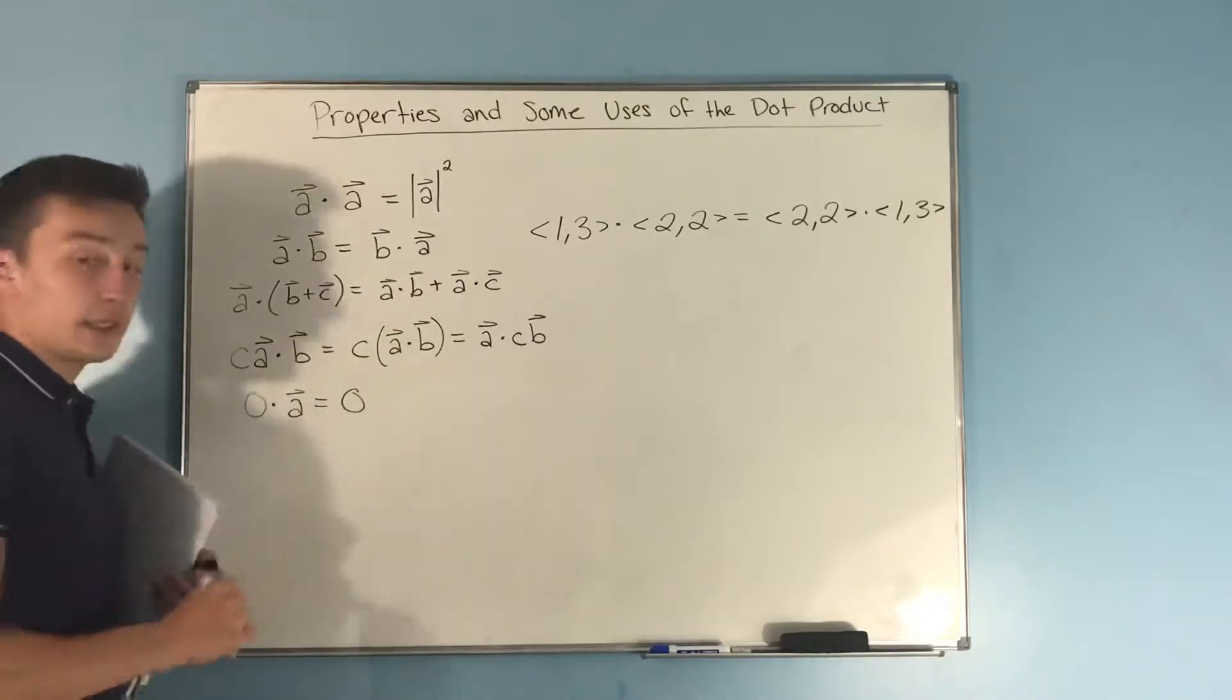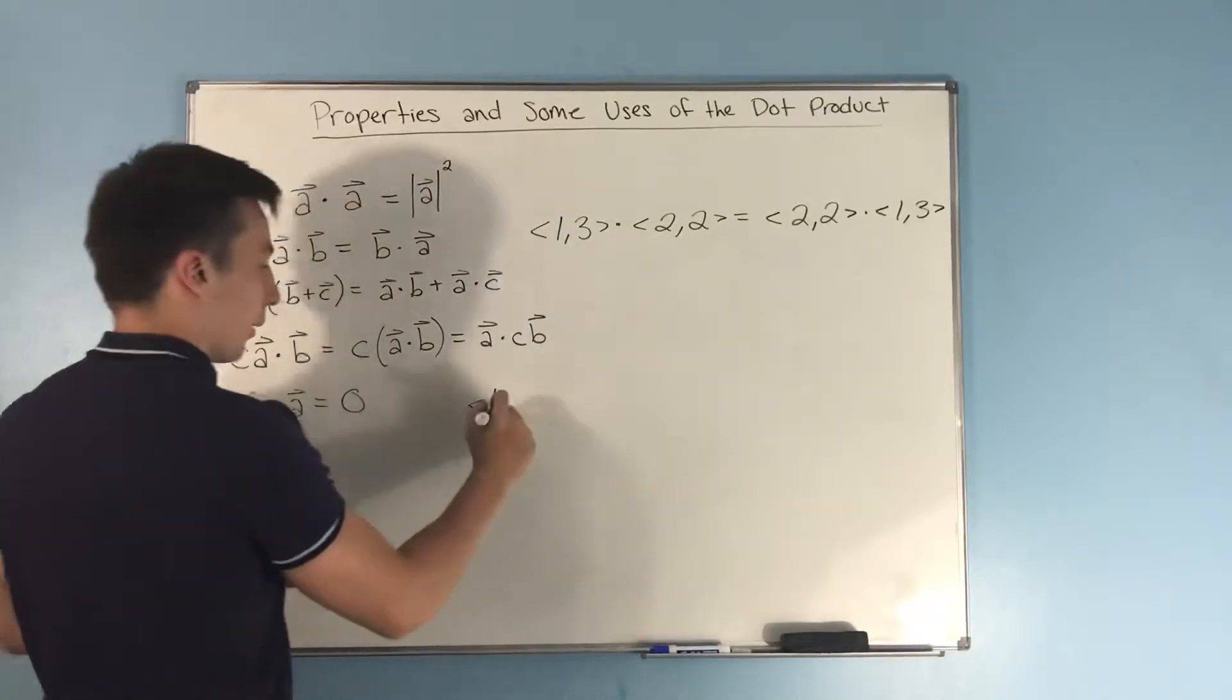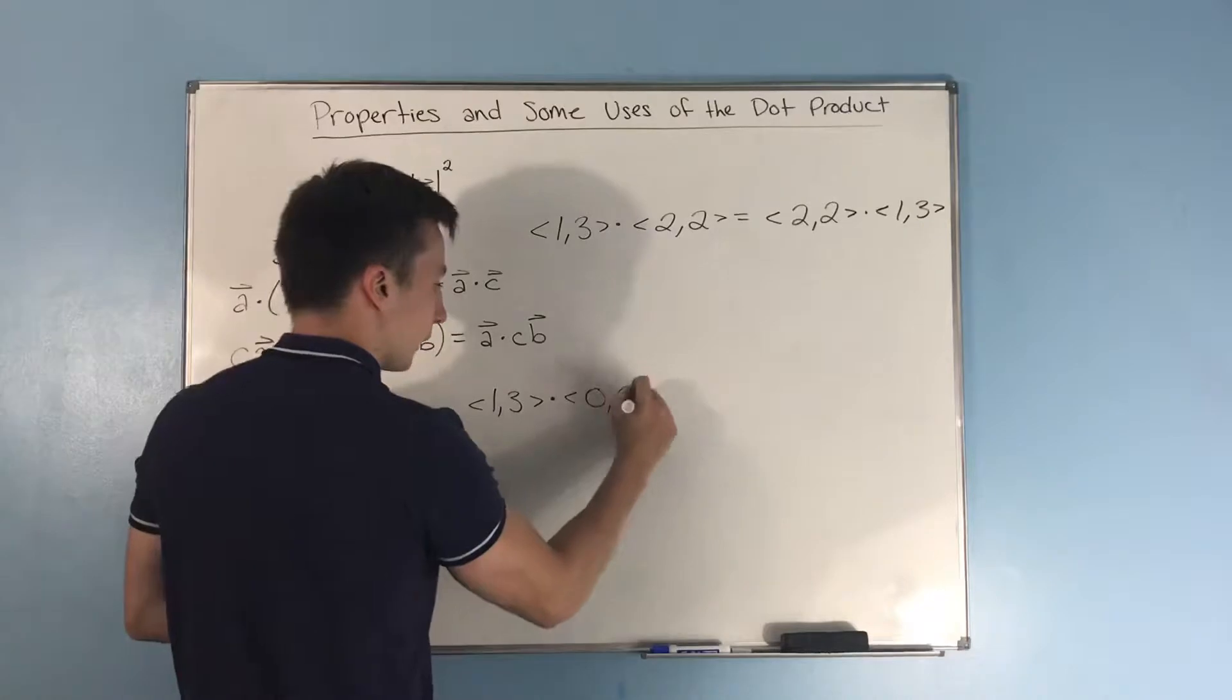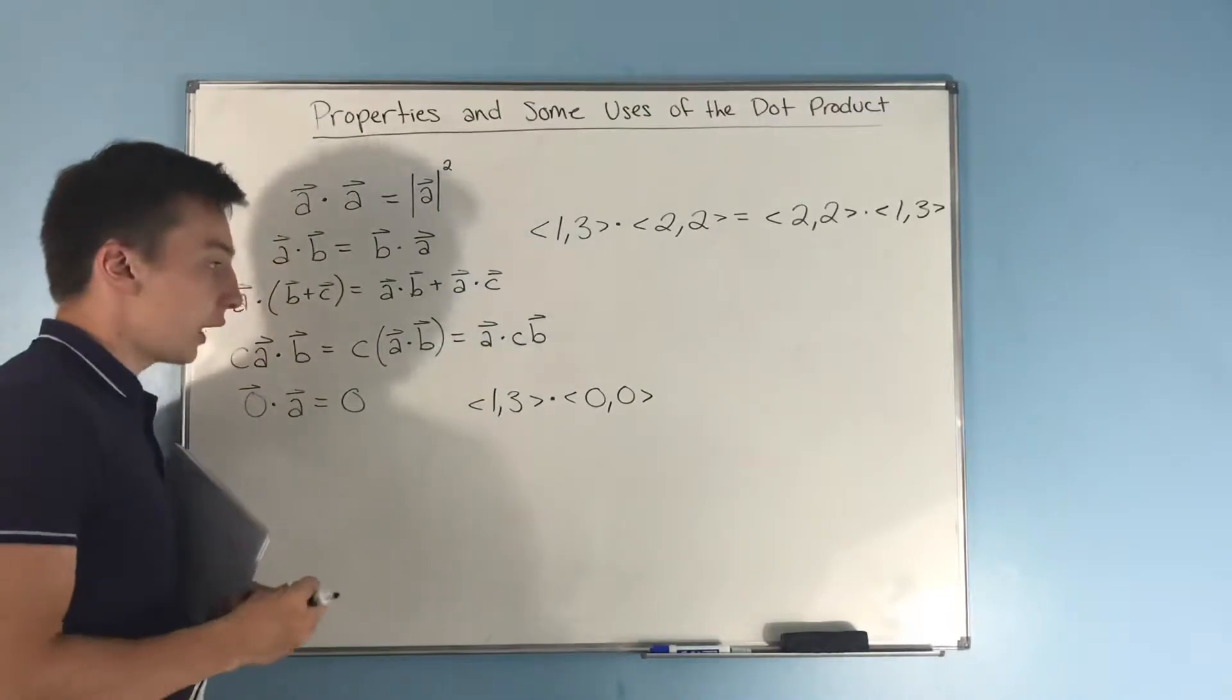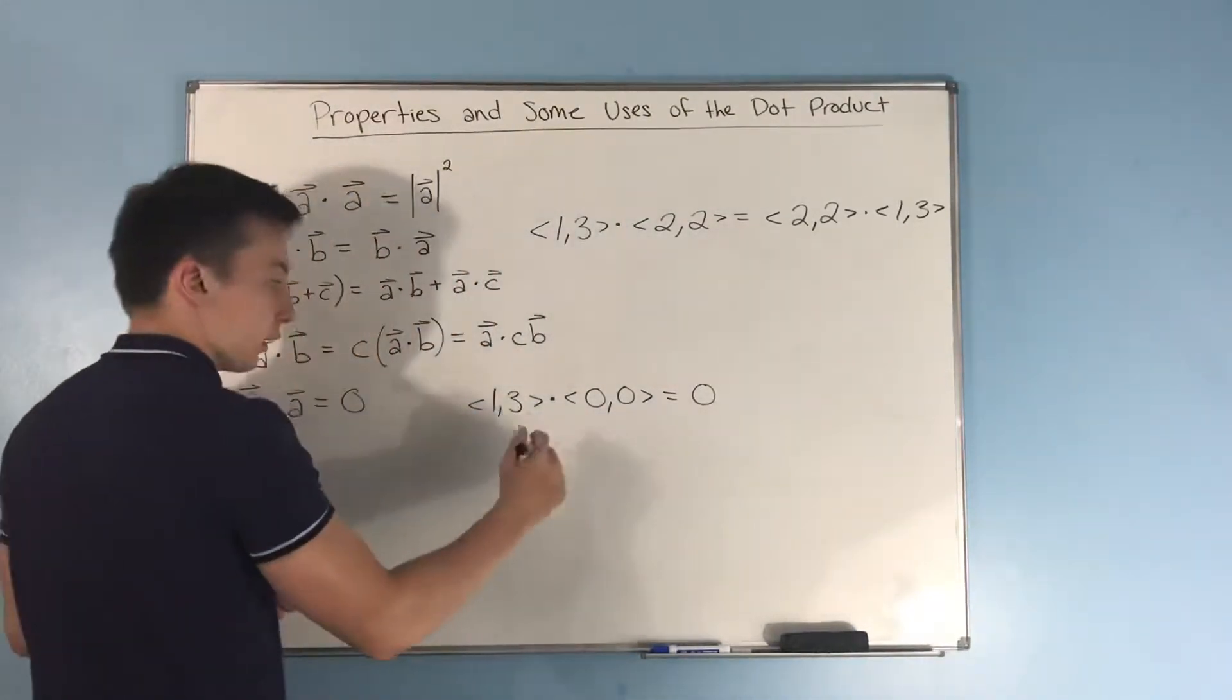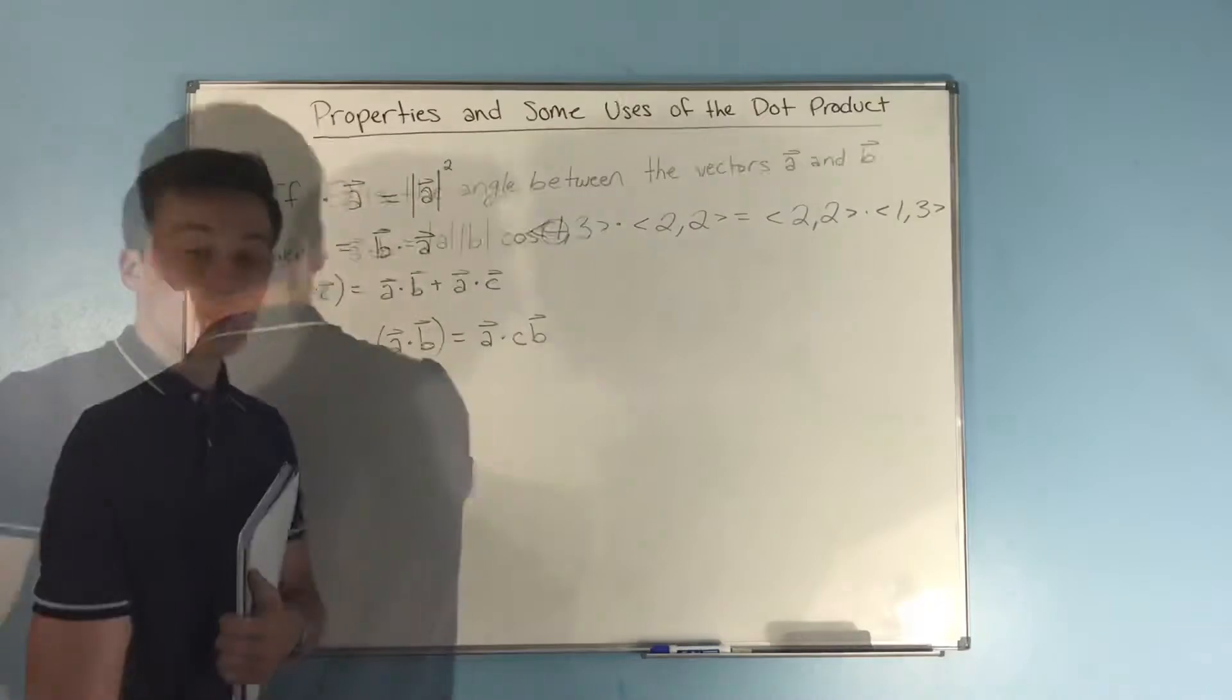Lastly, we have that if you dot anything with zero, it's going to equal zero. So if you had your a is 1, 3 and you dot it with 0, 0, because that's what the zero vector is, you get 1 times 0 is 0 plus 3 times 0 which is 0. You see that it equals 0.